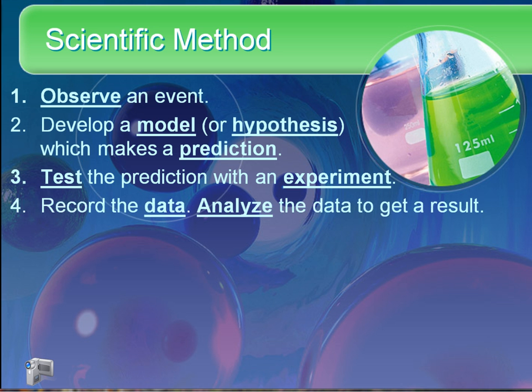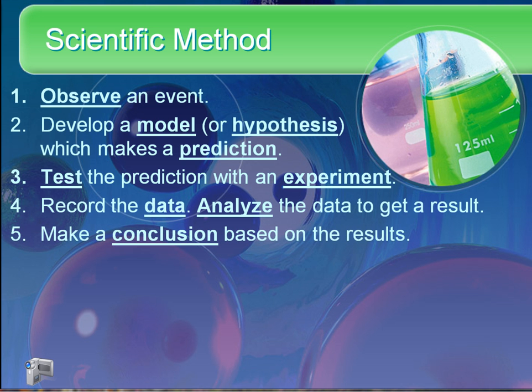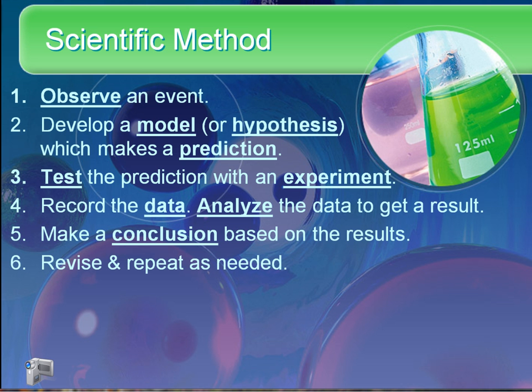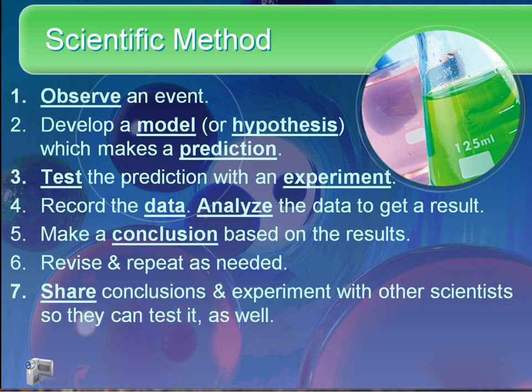We have data in order to draw any conclusions. In our experiment, we record data and analyze the data to get results. Finally, we make a conclusion based on those results. We revise and retest, meaning that we want to do the experiment again to make sure we didn't make an error somehow. We also try to see if we can answer any questions posed by the experiment. We share those conclusions with other scientists so that they can test it as well.